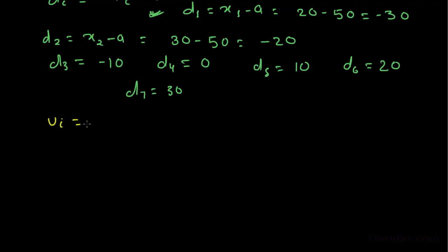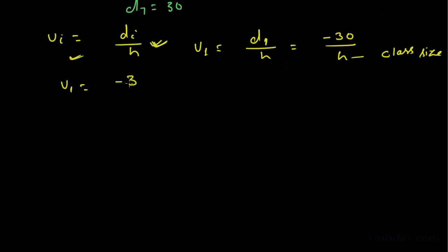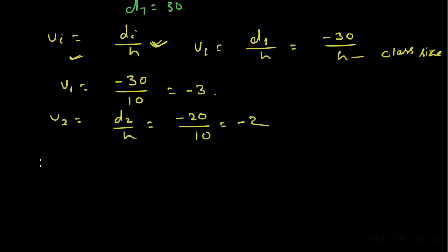Now, we have to calculate ui. ui is equal to di upon h. This is the general formula for calculating ui. By the help of this formula, we can calculate u1. u1 is equal to d1 upon h, which is minus 30. We know that h is 10 — h is our class size. So u1 is equal to minus 30 upon 10, equal to minus 3. Similarly, u2 is d2 upon h, equal to minus 20 upon 10, equal to minus 2. Similarly, u3 is minus 1, u4 is 0, u5 is 1, u6 is 2, and u7 is 3.